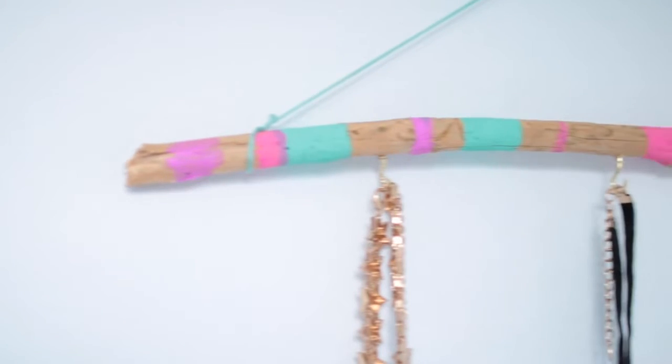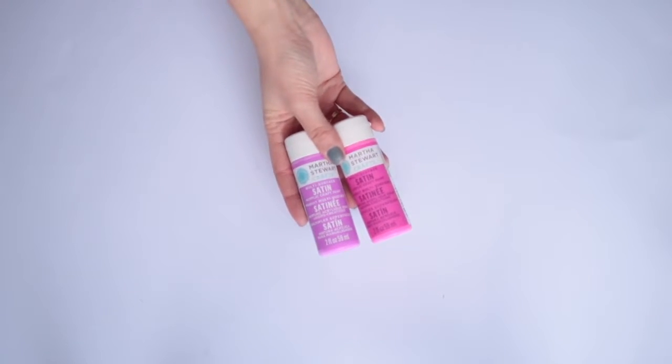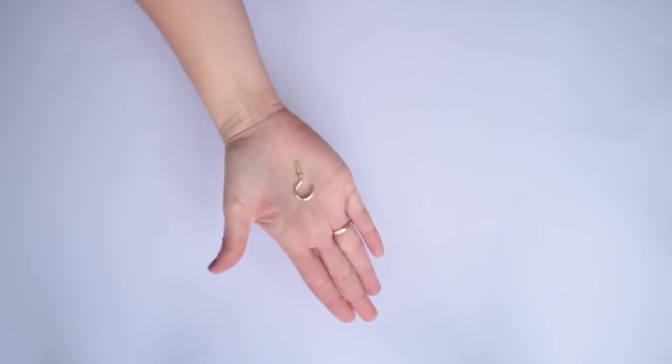Next up is this very simple driftwood hanger and this is a great way to display your jewelry, your scarves or any kind of accessories that you want hung up on your wall. You'll need some craft paint. You'll need a piece of driftwood and you will also need some small hooks.